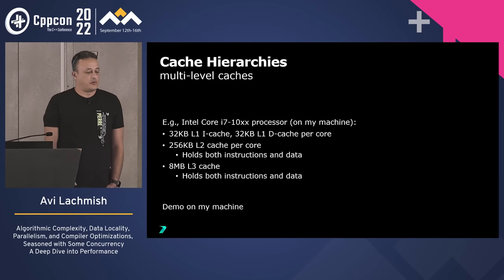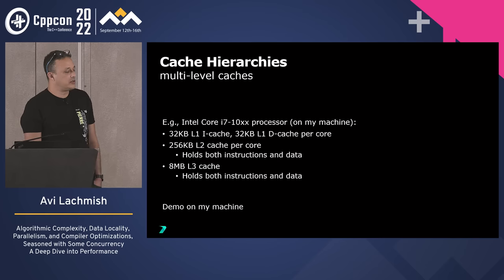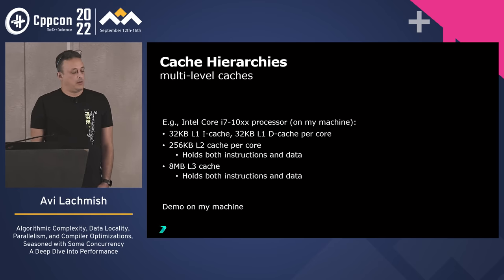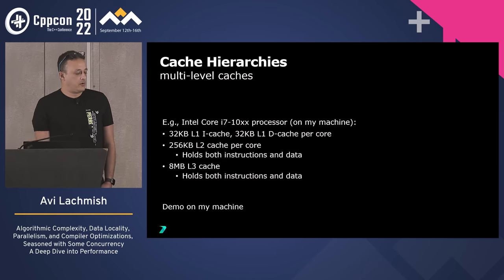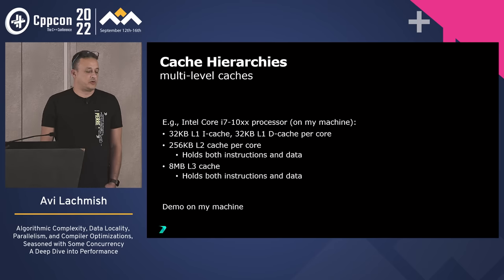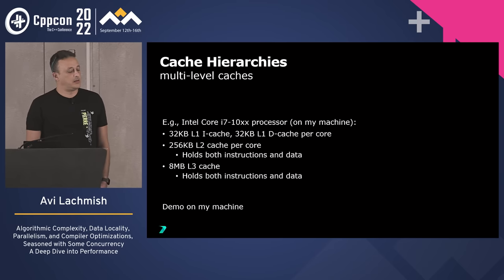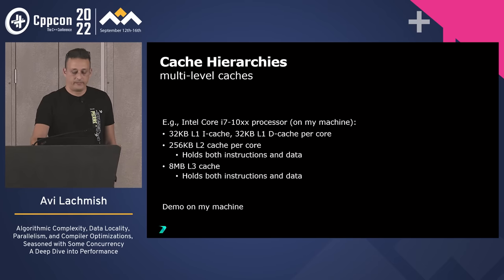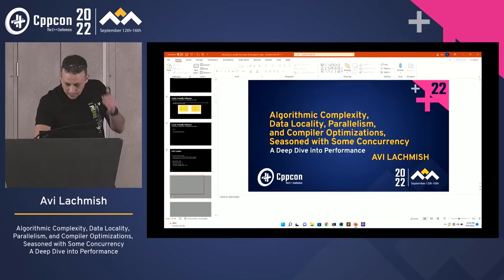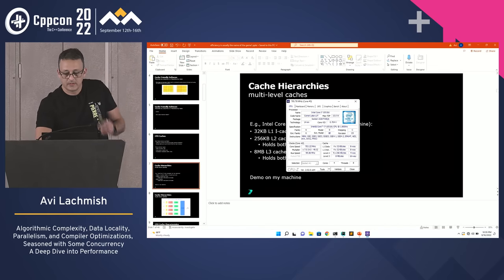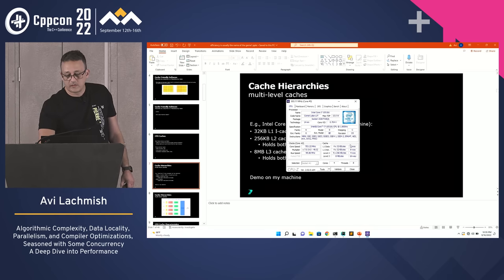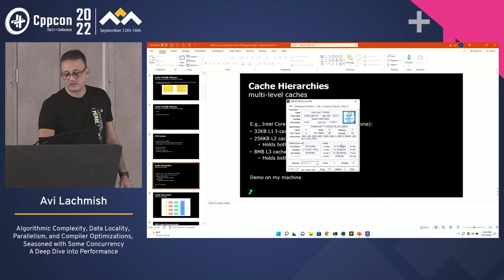On my machine — an i7 10th generation processor — I have an L1 instruction cache and L1 data cache of 32 kilobytes each, 256 kilobytes of L2 cache holding both instructions and data, and 8 megabytes of last-level cache holding both instructions and data. There is also an associativity that we'll discuss, but those are the sizes.